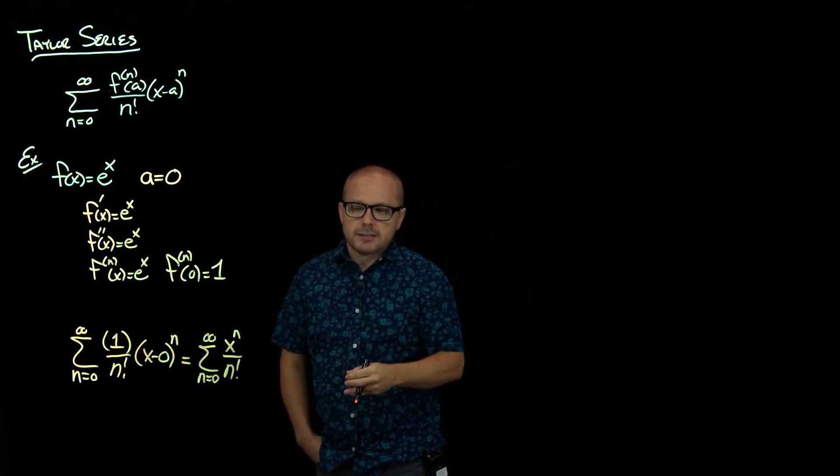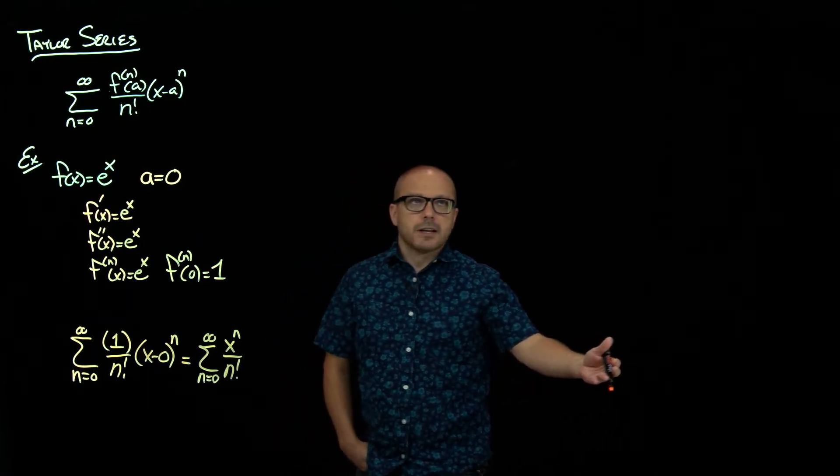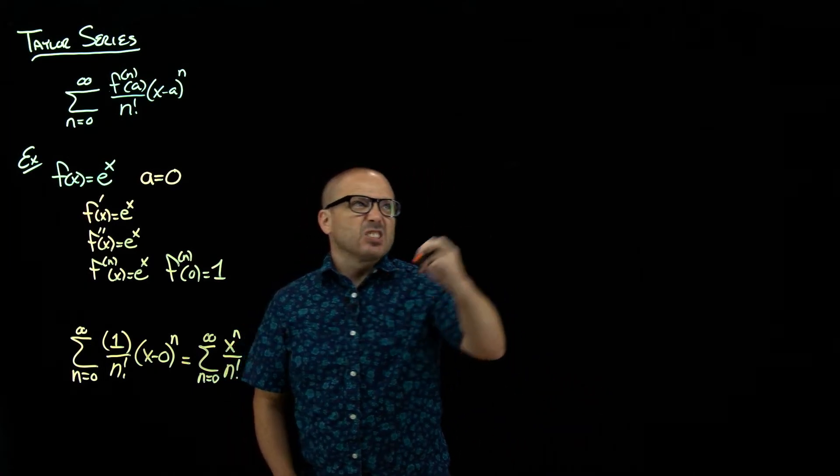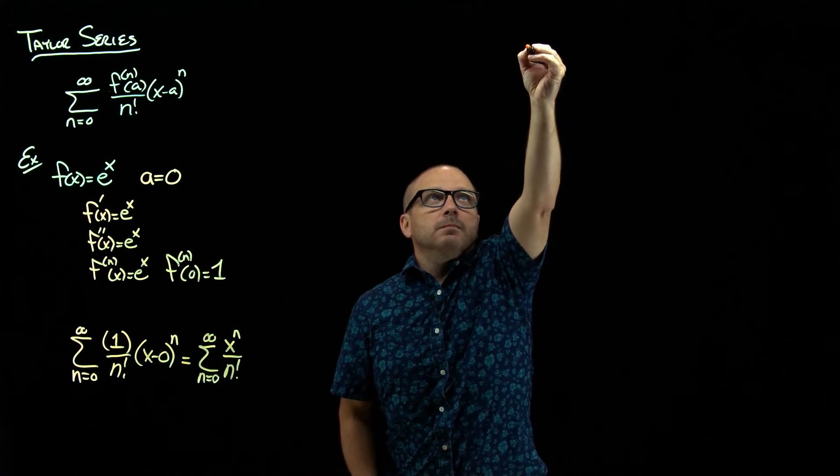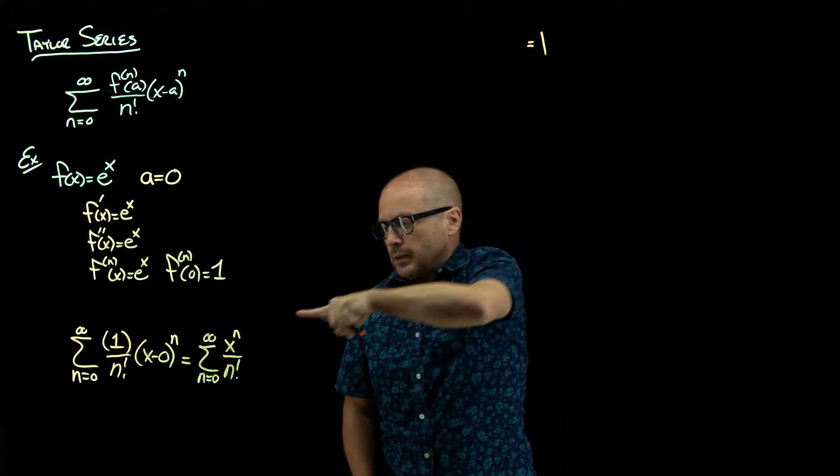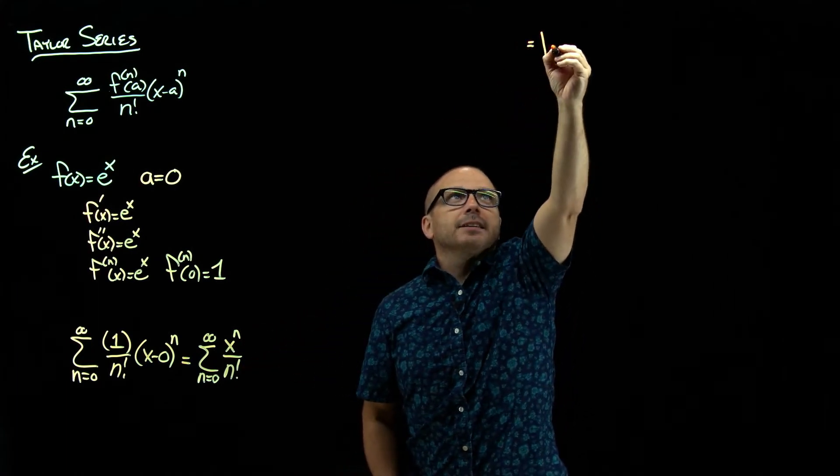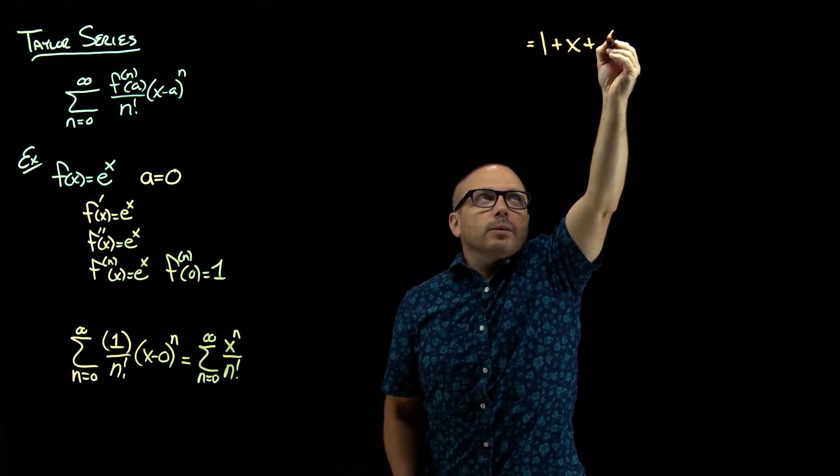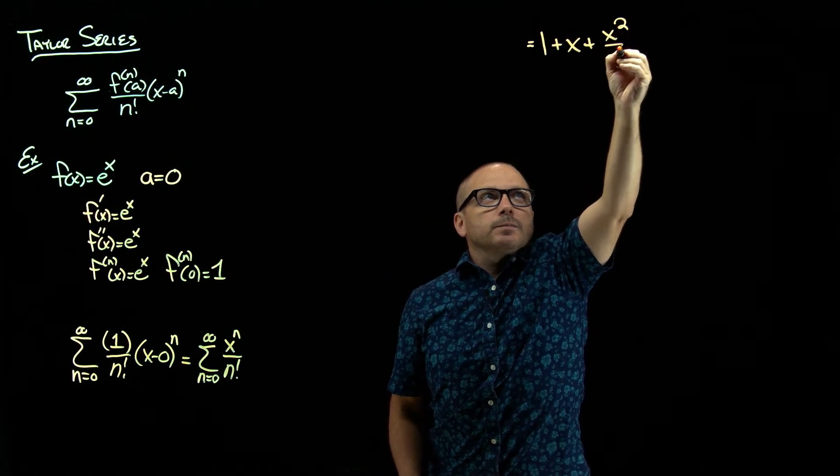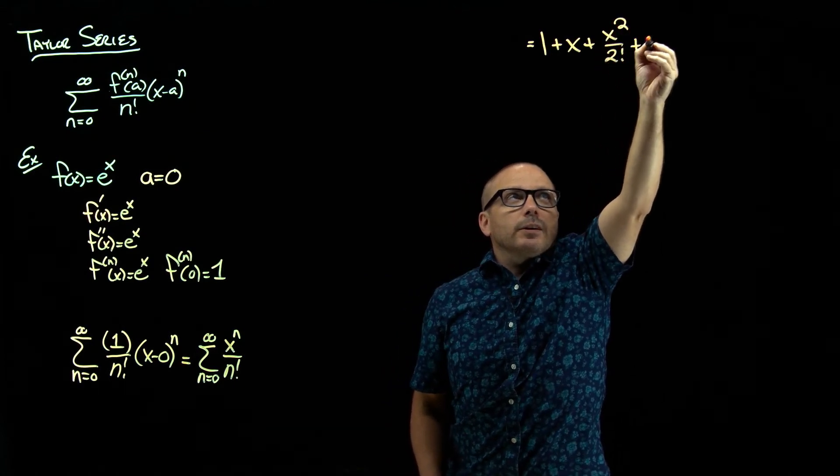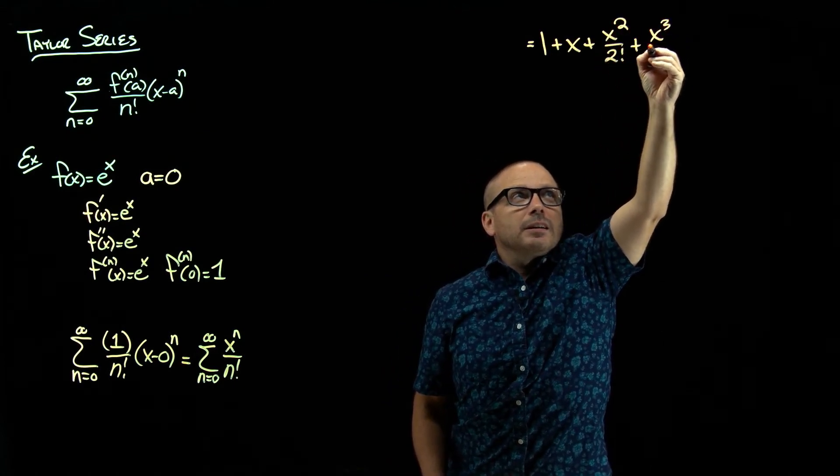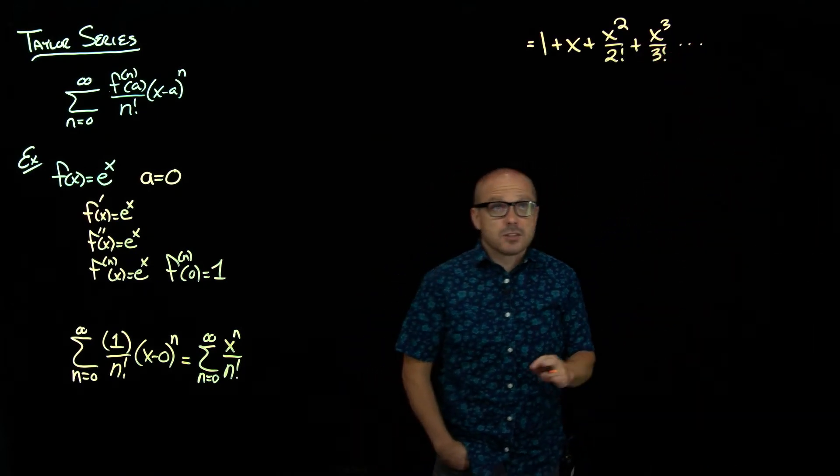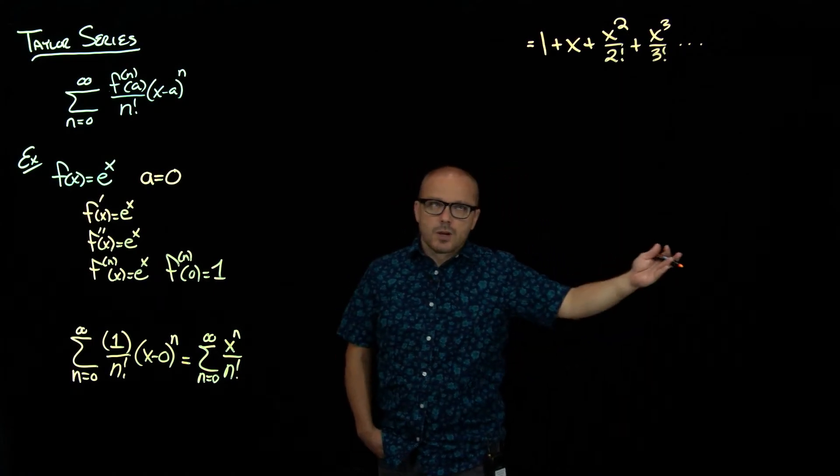And to get a better sense of what that looks like, let's just write it out. Write out some terms here. When n is 0, this is just 1. And then when it's 1, it's x to the first over 1 factorial. Then x squared over 2 factorial, x cubed over 3 factorial, and so on forever. That's our series. The series continues on forever.